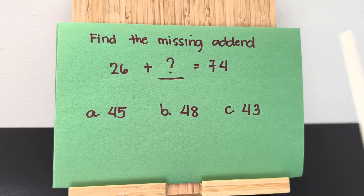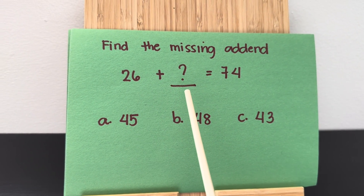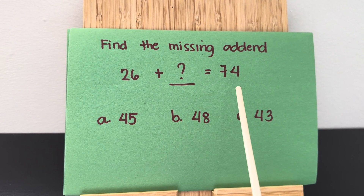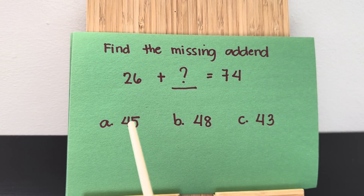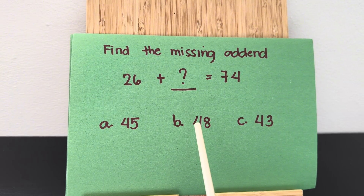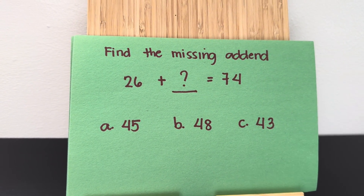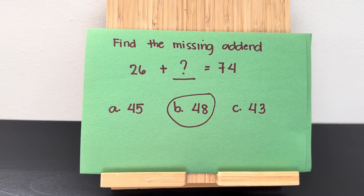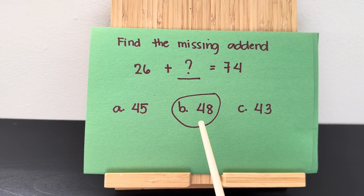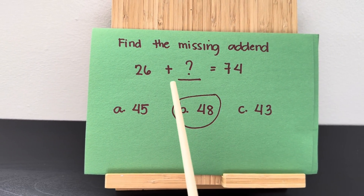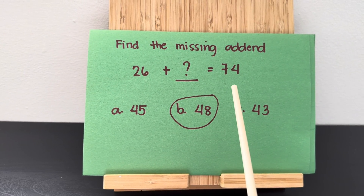Next, let's find the missing addend. 26 plus blank is equals to 74. Is it letter A, 45? Letter B, 48? Letter C, 43? If your answer is 48, then you are right. 26 plus 48 is equals to 74.